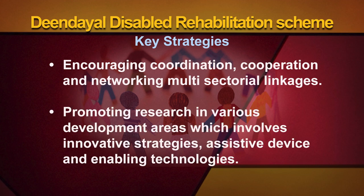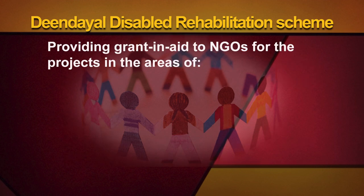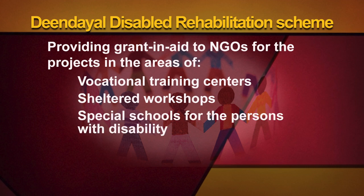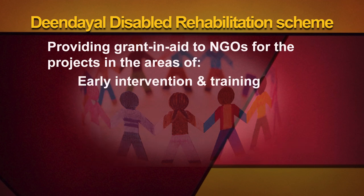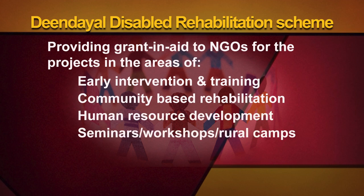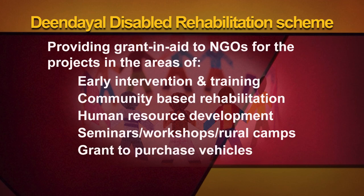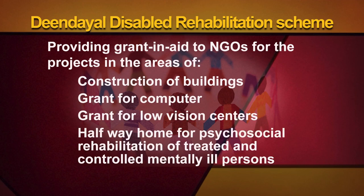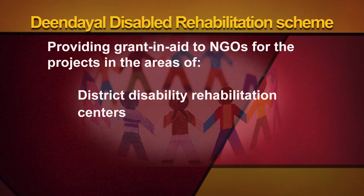The scheme also promotes research in various development areas involving innovative strategies, assistive devices, and enabling technologies. Apart from this, the scheme provides grant-in-aid to NGOs for projects in the areas of vocational training centers, sheltered workshops, special schools for persons with disabilities, home-based rehabilitation programs, preschool, early intervention and training, community-based rehabilitation, human resource development, seminars or workshops or rural camps, grant to purchase vehicles, construction of buildings, grant for computers, grant for low vision centers, Halfway Home for Psychosocial Rehabilitation of Treated and Controlled Mentally Ill Persons, and District Disability Rehabilitation Centers.